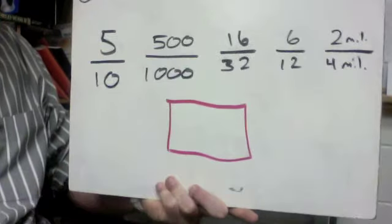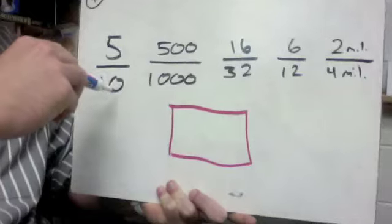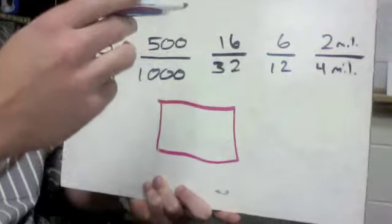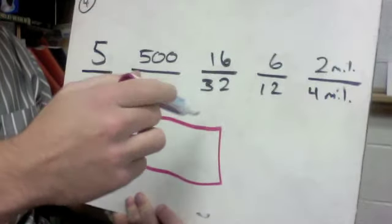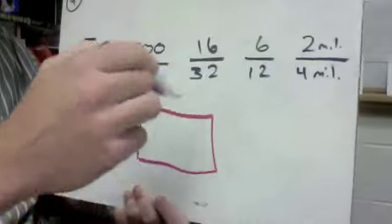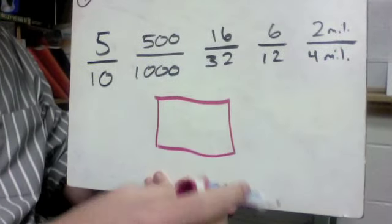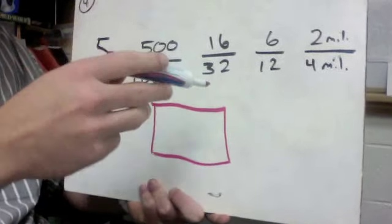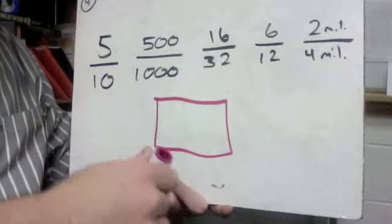If I just drew this generic rectangle, to find 5/10, we would be splitting this into 10 pieces. We would be splitting this into a thousand pieces, 32 pieces, 12 pieces, four million pieces. And then the top number is just how many we would fill in. Now this one, if I look at all of these, we've got very different numbers.